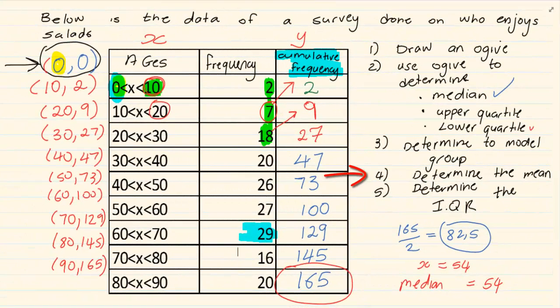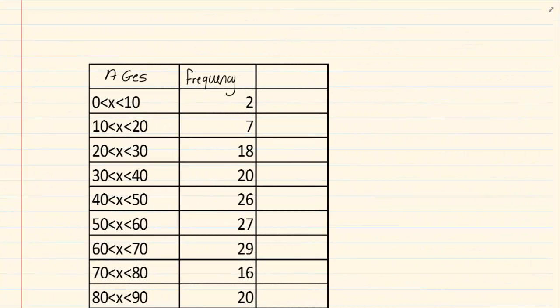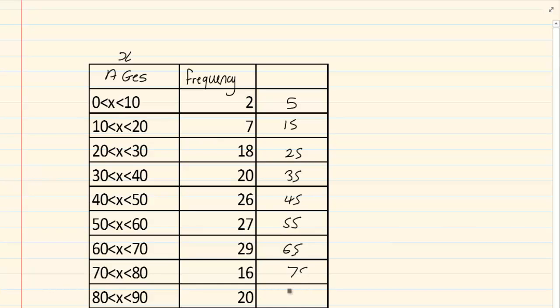Then they are asking determine the mean. When they say determine the mean, that means you have to use your calculator. We had discussed this in our previous videos under your summary of your grade 10 where we would use our calculator. To calculate the mean, you know before you use your calculator, you need to calculate the midpoint for the x. So we know we are going to say 10 plus 0 divided by 2. So we end up with 5, 15, 25, 35, 45, 55, 65, 75, 85.